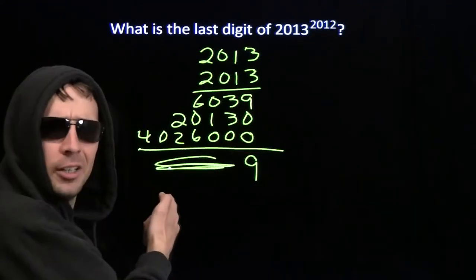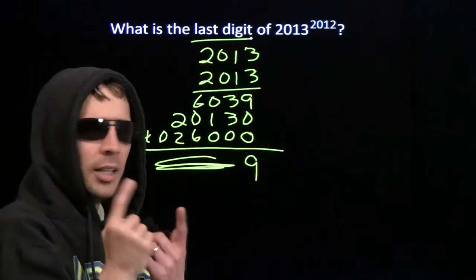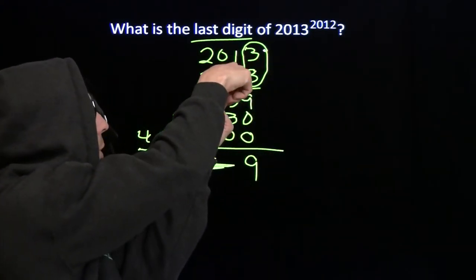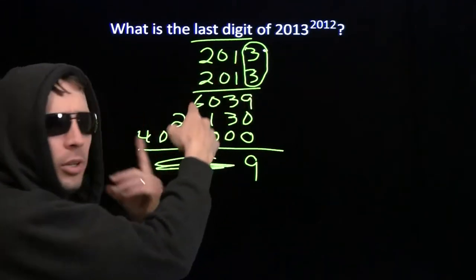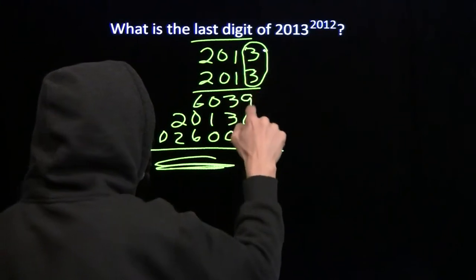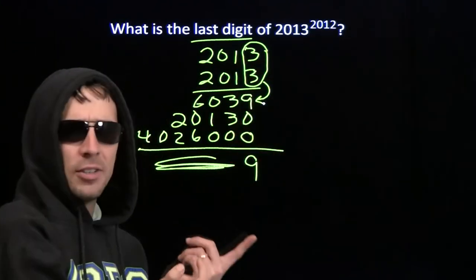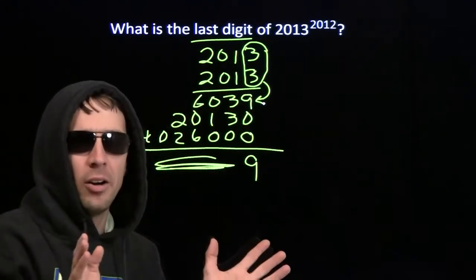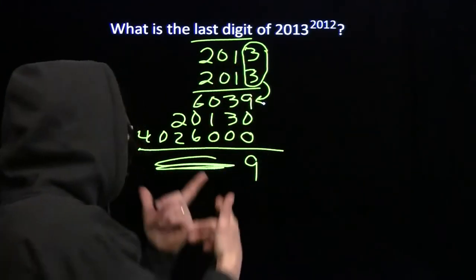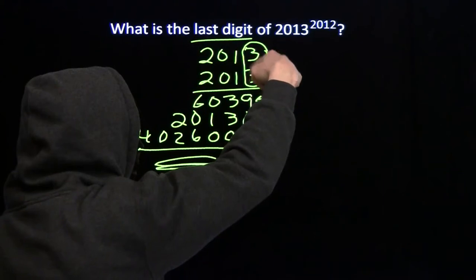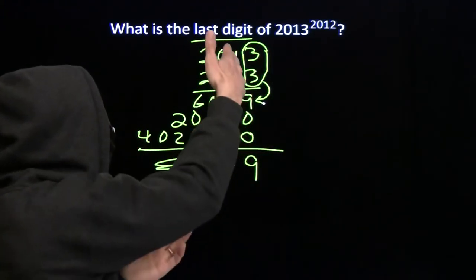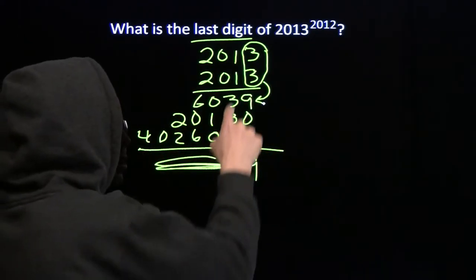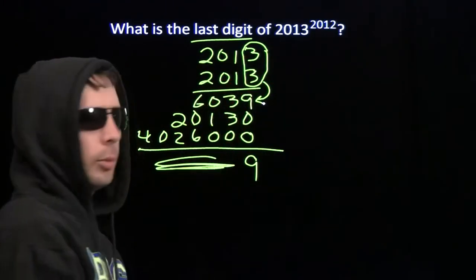Actually, we don't care about any of this stuff out here — all we care about is the last digit. We get the last digit just from multiplying the last digits of the two numbers we started with. We don't even care about the rest of the numbers. So 3 times 3 is going to give us the last digit, which is 9. All this other stuff is just going to affect the tens, the hundreds, the thousands — all those other digits we don't care about. Whenever you multiply two numbers to get the last digit of the product, all you care about is the product of the last digits of the original numbers.